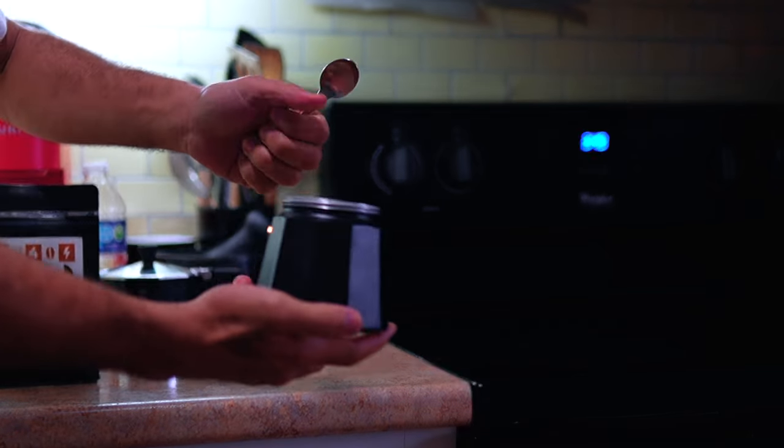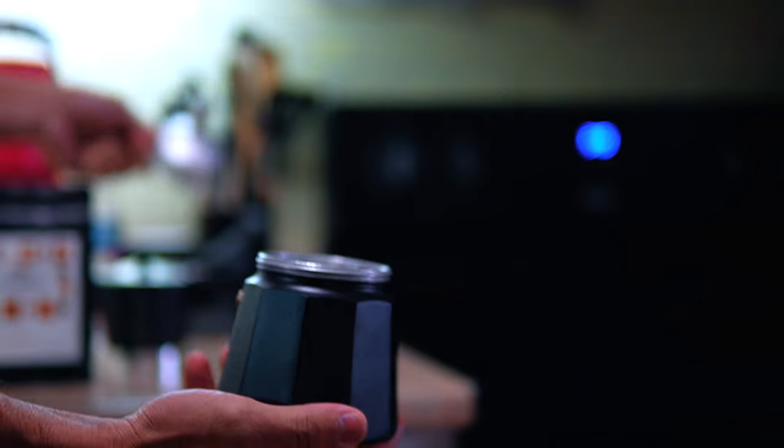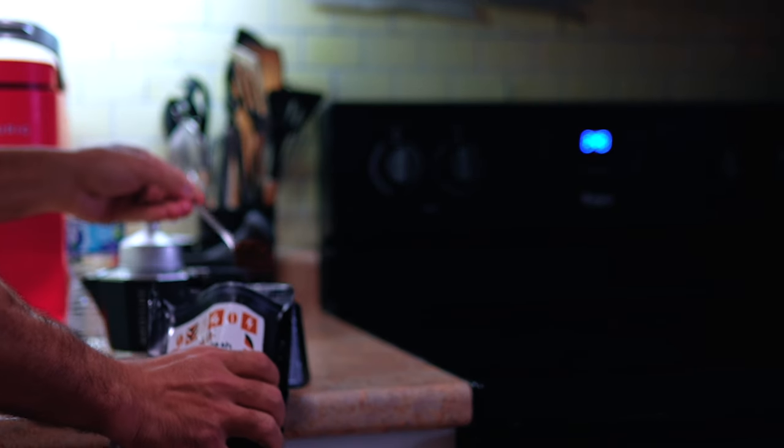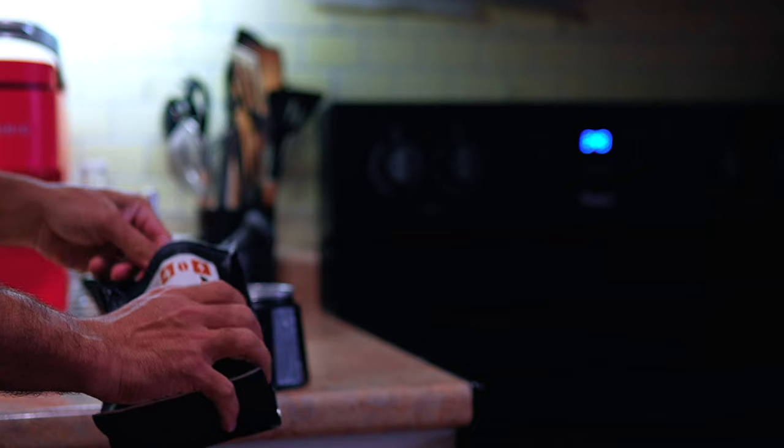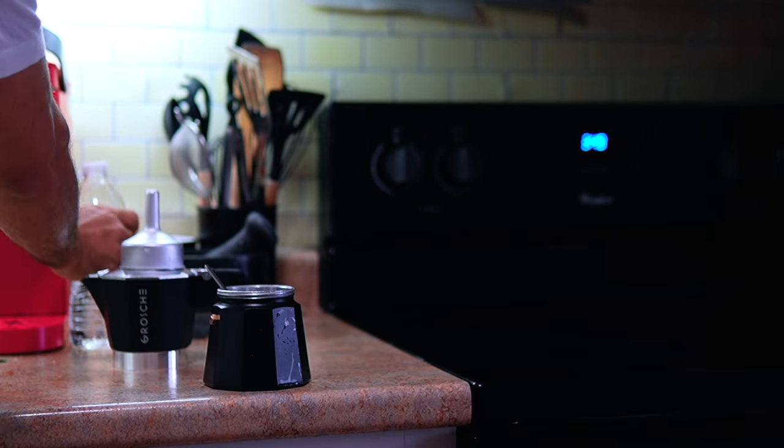Now let's talk about the brewing process. Using the Milano is a breeze. Simply fill the bottom chamber with water, add your favorite ground coffee to the filter basket, assemble the pot, and place it on your stovetop. In just a few minutes, you'll have a rich and flavorful cup of espresso ready to enjoy.